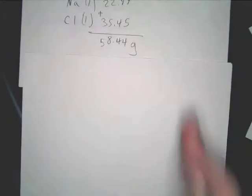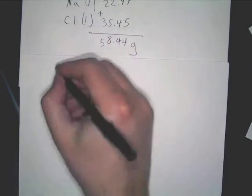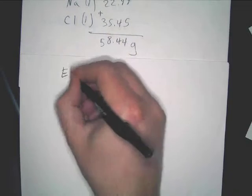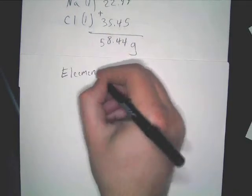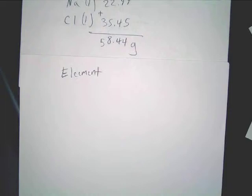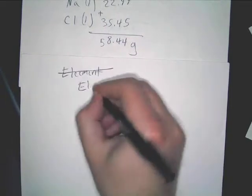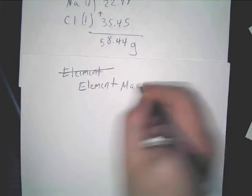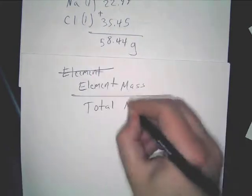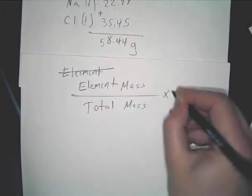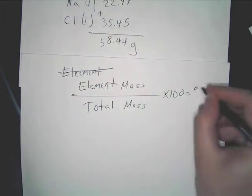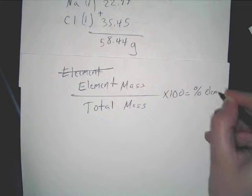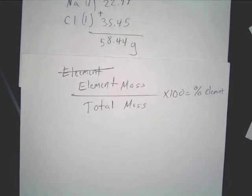Now what we're going to do after that — we've got our total mass and our individual masses. Here's your formula: element mass over total mass times 100 will give you your percentage of the element. It's just that simple.